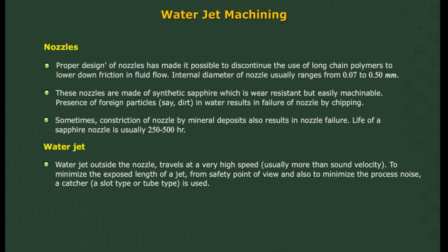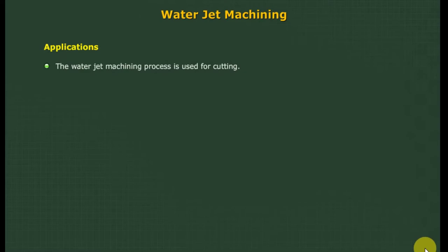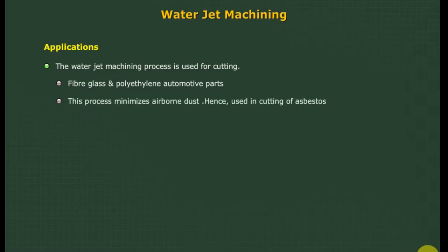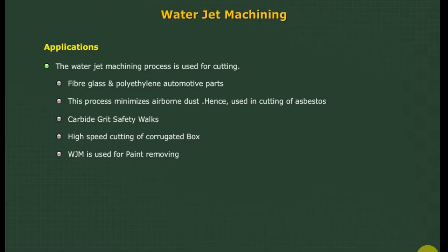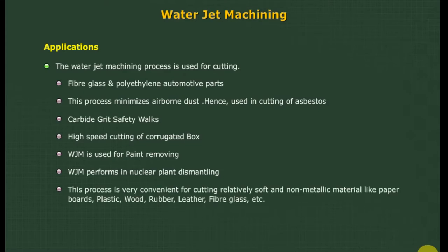Water jet outside the nozzle travels at a very high speed, usually more than sound velocity. To minimize the exposed length of the jet for safety and to reduce process noise, a catcher — of slot type or tube type — is used. WJM is used for cutting fiberglass and polyethylene automotive parts, cutting of asbestos (minimizing airborne dust), high-speed cutting of corrugated boxes, paint removing, and nuclear plant dismantling. The process is convenient for cutting relatively soft and non-metallic materials like paper, plastic, wood, rubber, leather, fiberglass, etc.